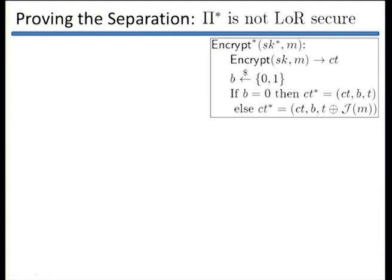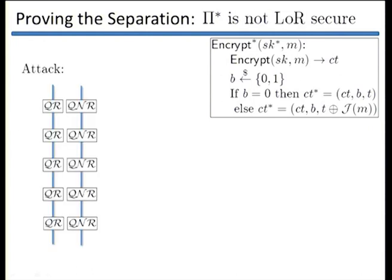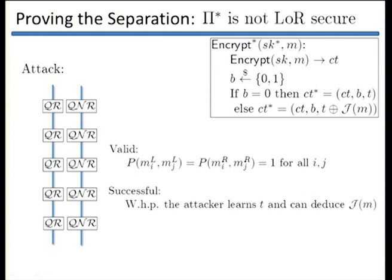To conclude the proof, we give an attack on left-or-right security. On one side, we query for all quadratic residues; on the other side, for only quadratic non-residues. This is a valid attack since pairing any two in one side gives a QR, and the product of two non-residues is also a quadratic residue. The attack succeeds because with high probability the attacker gets a ciphertext where B equals 0, learning the one-time pad T. Using another ciphertext where B equals 1, he can deduce the sign of the messages and determine which side he is on. That concludes the proof.